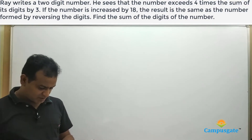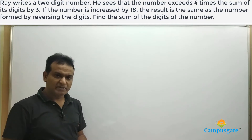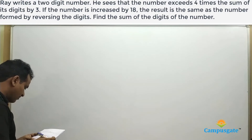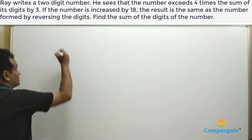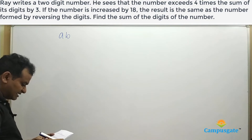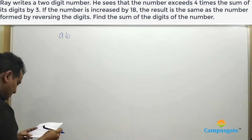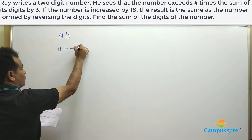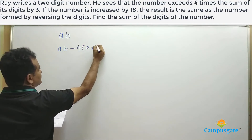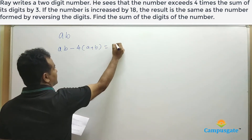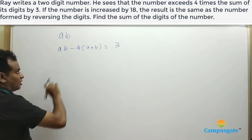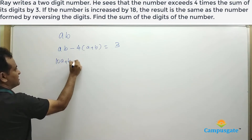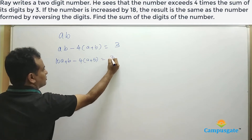Let us frame some equations based on the information given. It is given that the number exceeds four times the sum of its digits by three. Let us take the two-digit number as AB. AB exceeds — that means greater than — four times the sum of its digits by three. AB should be in the decimal format, so we write it as 10A plus B minus 4 into A plus B equal to 3.